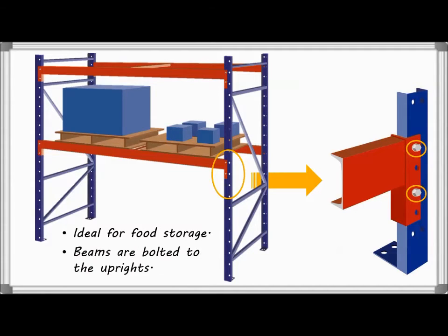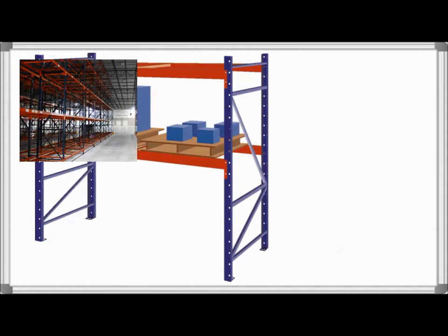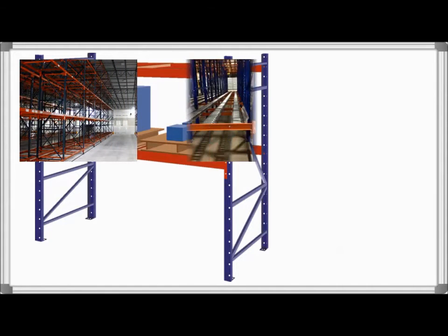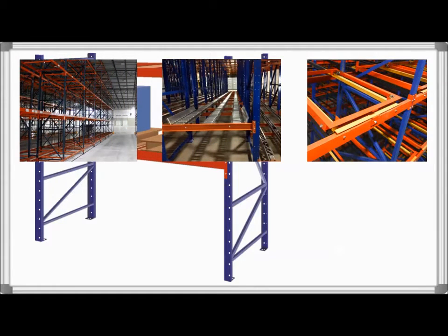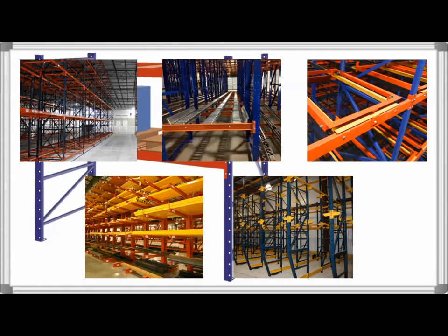In structural style racking, beams are bolted to the uprights. This beam to frame connection contributes to the overall high capacity capability of structural rack systems. Structural steel rack can be designed as a selective system, a flow system, a pushback system, a cantilever system, and drive-in and drive-through systems.